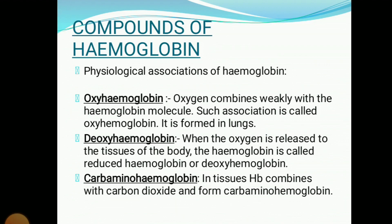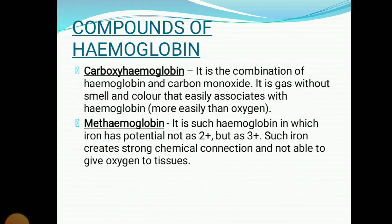Next we have carbaminohemoglobin. As the name suggests, carbamino relates to carbon dioxide — in the tissues, when hemoglobin combines with carbon dioxide, it forms carbaminohemoglobin. The next major term is carboxyhemoglobin. Don't get confused between carbaminohemoglobin and carboxyhemoglobin: carbaminohemoglobin is hemoglobin combined with carbon dioxide, whereas carboxyhemoglobin is a combination of hemoglobin and carbon monoxide.